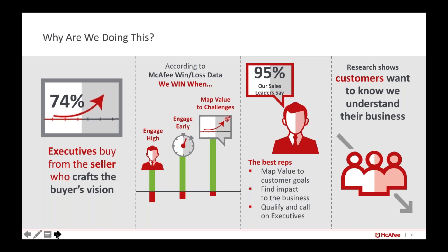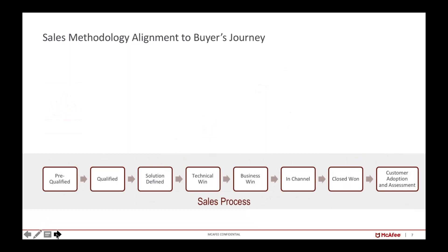That was backed up by our own net promoter scores — our customers wanted us to show we understood their business. We interviewed about 95 percent of all sales leaders to find out what our best reps do, so we could get that middle 60 percent to do it too. When we looked at our own win-loss data, it was clear that when we engage high and have executive conversations early in the process — to understand the problems, paint the buying vision, and map our value to the customer's challenges — we win consistently.